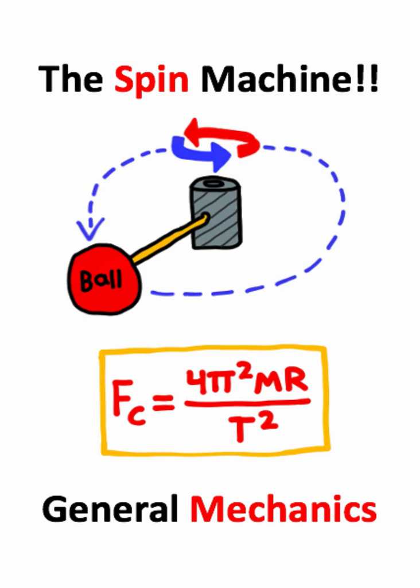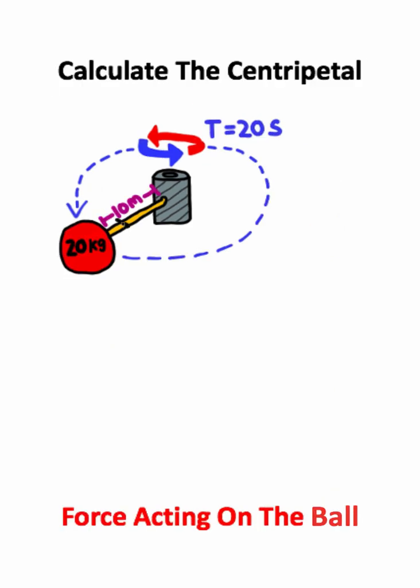I want to show you something really cool about physics and engineering. In this problem we have a 20 kilogram ball, and the ball is being spun around in a circle by this machine in the center here. It takes 20 seconds for the ball to complete one full cycle.